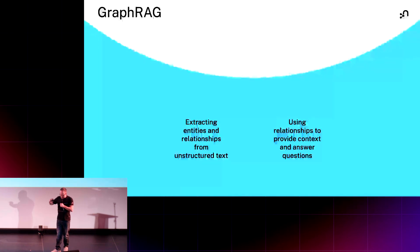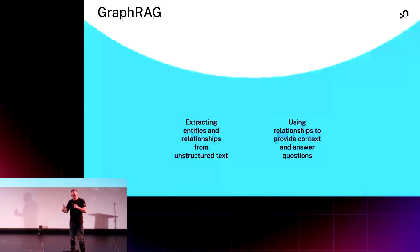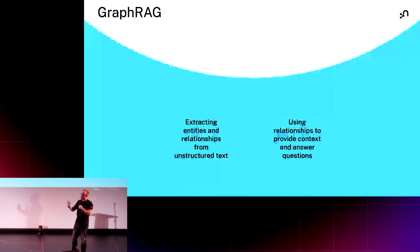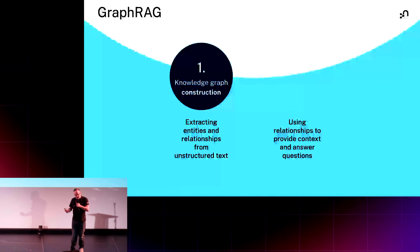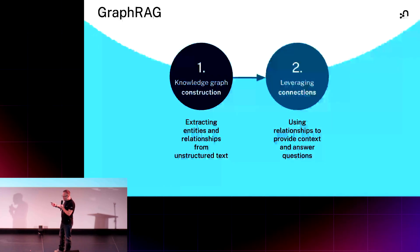Graph RAG started as a term coined by Microsoft, on the back of a research paper that essentially said: if you use a knowledge graph in conjunction with your vector index, you get better results. But it has evolved — graph RAG now also talks about knowledge graph construction, creating that graph from unstructured data, and using relationships to leverage those connections to provide additional context.